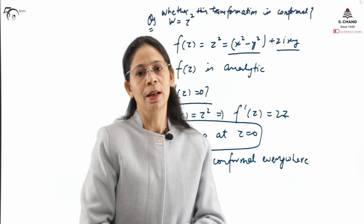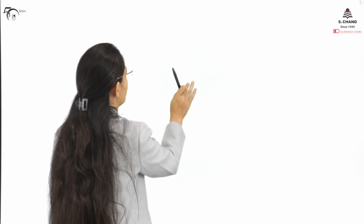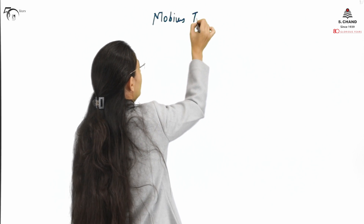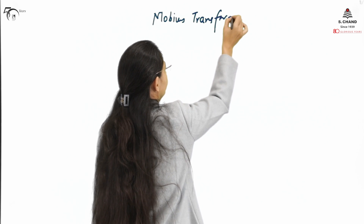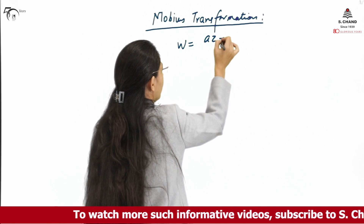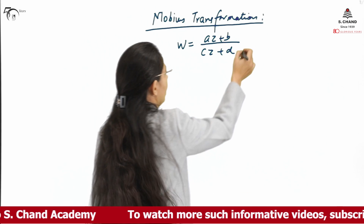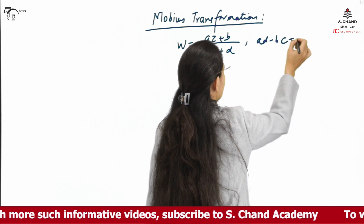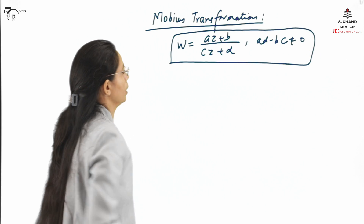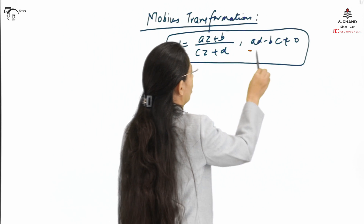Next in the row is the Möbius transformation. The transformation W equals (AZ plus B) divided by (CZ plus D) is called the Möbius transformation if AD minus BC is not equal to zero. This condition — AD minus BC ≠ 0 — must hold for the transformation to be a valid Möbius transformation.